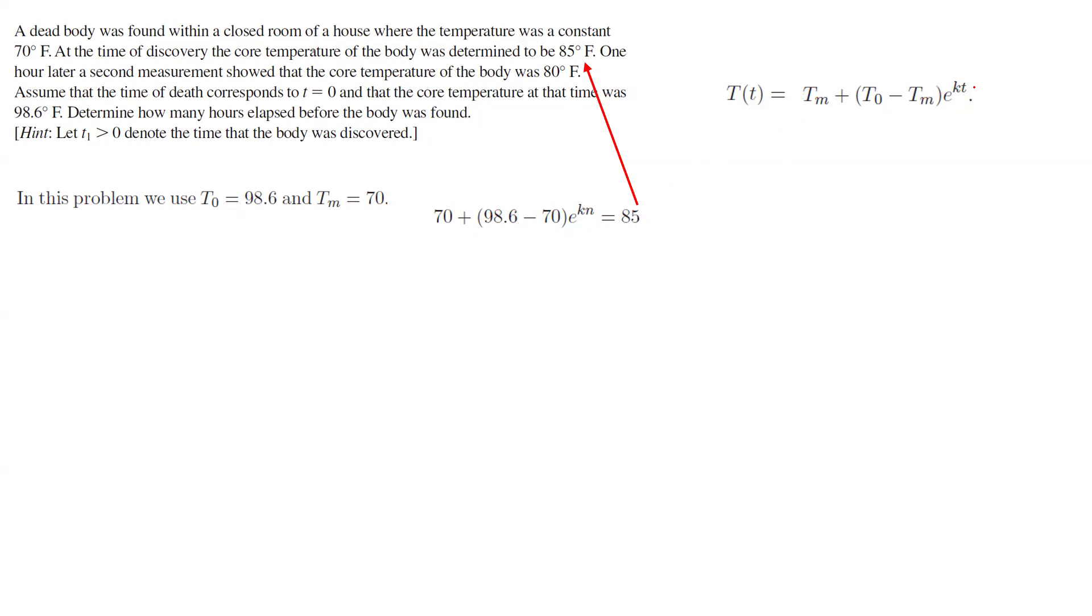So we are assuming that T is equal to n. Then since we have one hour later, it helps us to write this as n plus 1. After one hour, the temperature becomes 80 degrees. On the other side, you have 70, which is the ambient temperature. It is fixed. Plus T sub 0, which is, again, fixed. The initial temperature, 98.6 minus the ambient temperature, e to power Kn plus 1. Why n plus 1? Because it says, after one hour. So if this is the initial hour, n, then n plus 1 is one hour later.